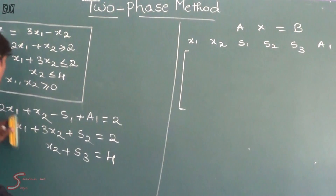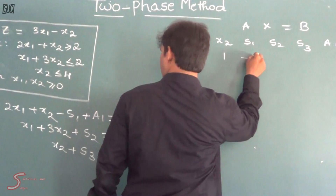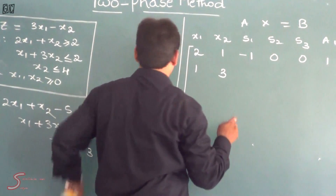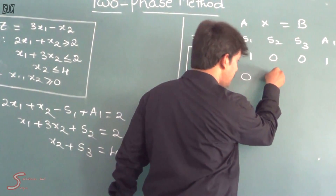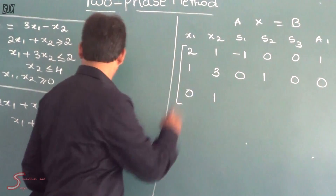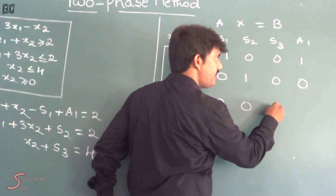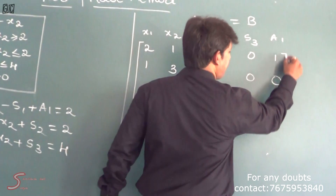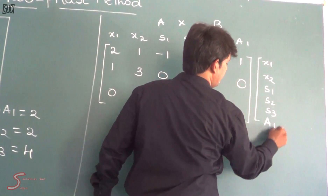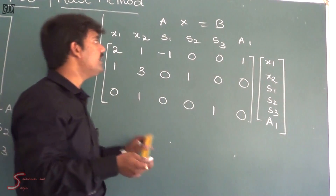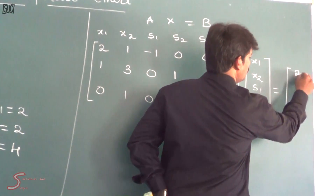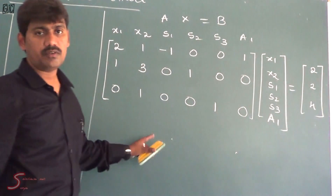Now I am going to represent all the variables: x1, x2, s1, s2, s3, and the artificial variable a1. The standard form is Ax equal to b. The coefficient matrix A includes: for row one — x1 is 2, x2 is 1, s1 is minus 1, s2 and s3 are 0, a1 is 1. Row two: 1, 3, 0, 1, 0, 0. Row three: 0, 1, 0, 0, 1, 0. And b equals 2, 2, 4.